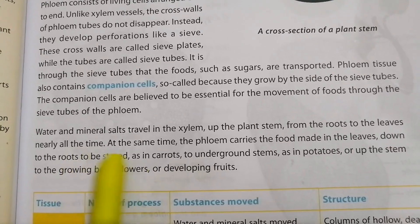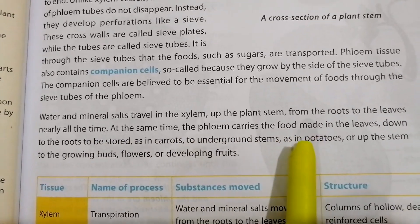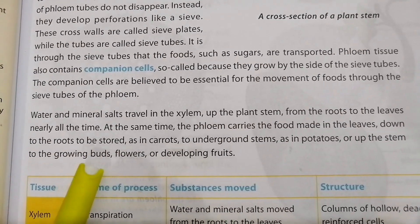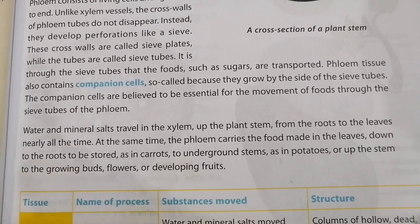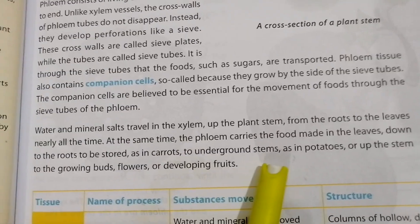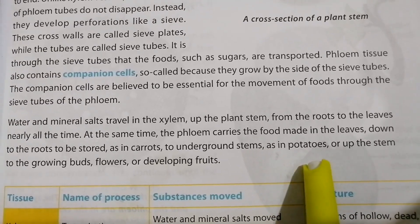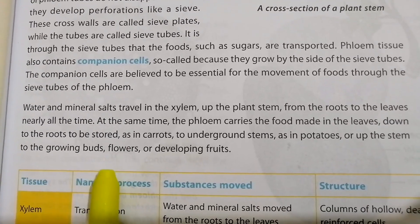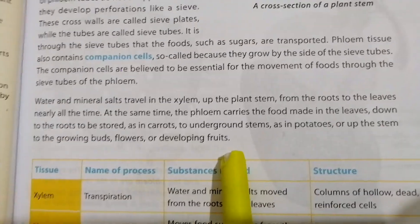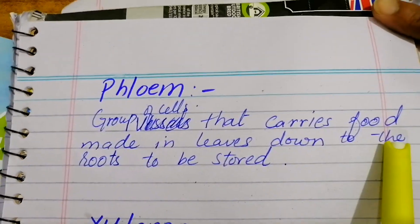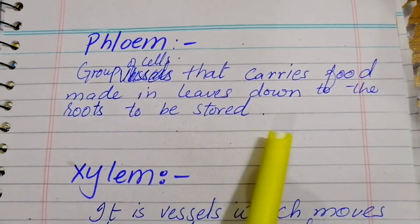Xylem takes water and mineral salts upward. At the same time, phloem carries the food made in the leaves down to the roots to be stored — from the upper part to the lower part. In the carrot, which is a root and underground stem, and in potatoes, food is stored. Phloem also carries food up the stem to the growing buds, flowers, and developing fruits.